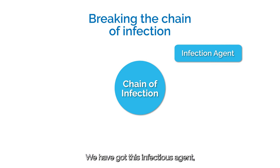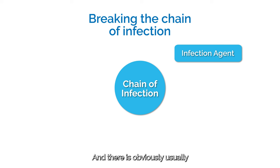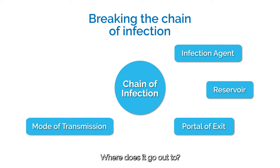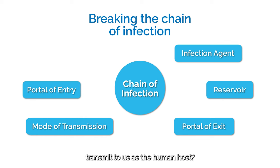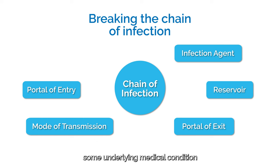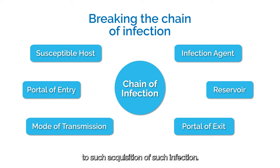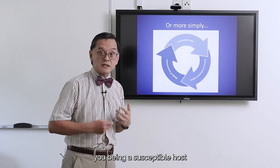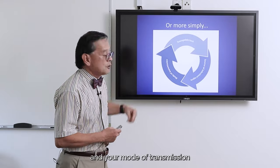We do it through what we regard as breaking the chain of infection. We have this infectious agent — a bacteria or a virus — that individuals can acquire. There is usually a reservoir of these pathogens floating around. This reservoir has a portal of exit. How does it then transmit to us as a human host? And once it gets transmitted, how does it enter? You and I could be healthy, but you may have an underlying medical condition that makes you susceptible to acquisition of such infection. And that's what we call the chain of infection. Broadly speaking, you're talking about a susceptible host, the source or infectious agent, and the mode of transmission.